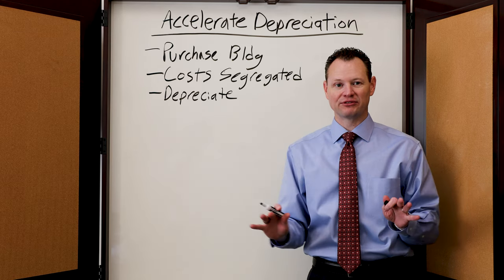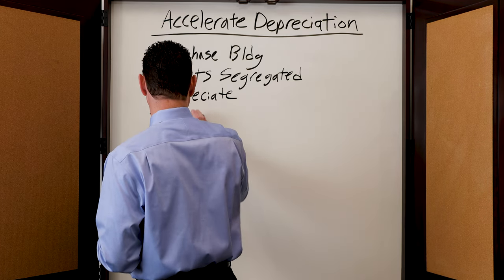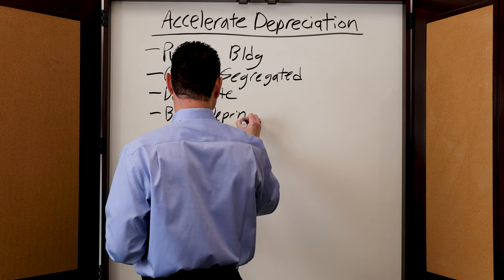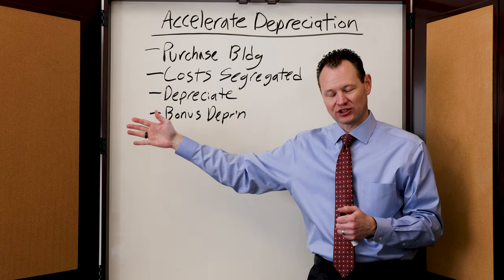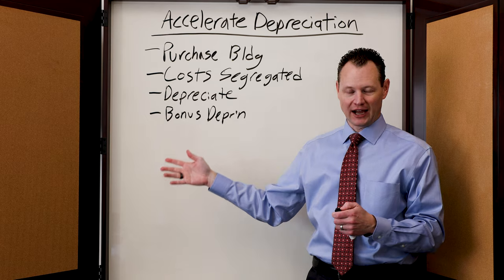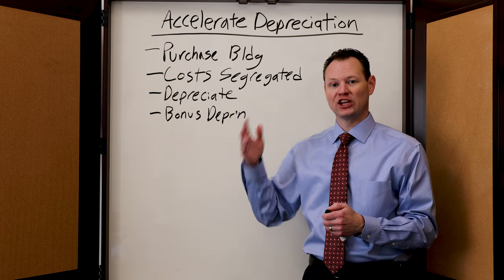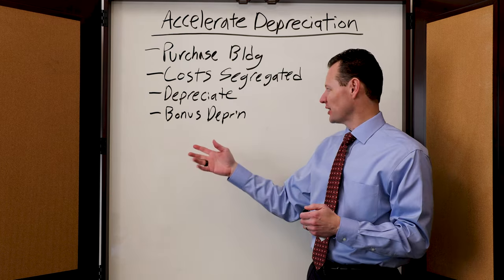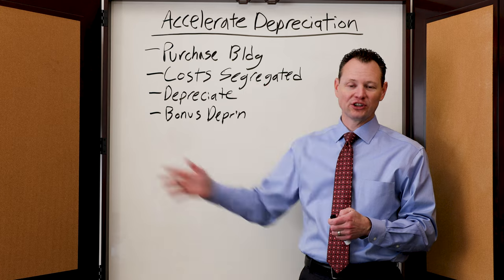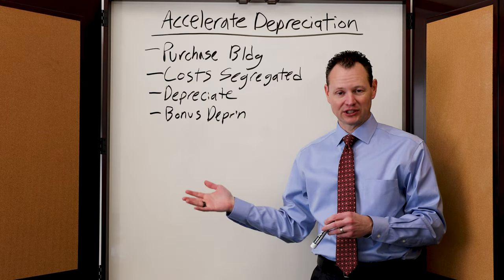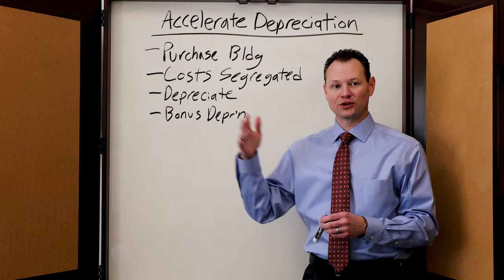Now there is a huge benefit currently under the tax law, and that is bonus depreciation. Bonus depreciation allows us to accelerate even faster some of those depreciation items. Our five year, seven year, and 15 year items can all be written off in one year when they are purchased. So rather than taking 39 years in a commercial building or 27 and a half years in a residential building, with bonus depreciation you can write those all off in one year and get a tremendous benefit.